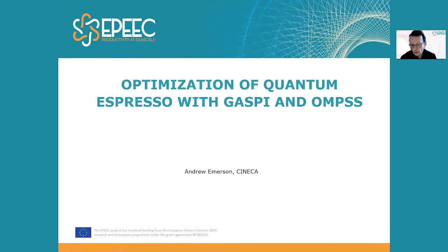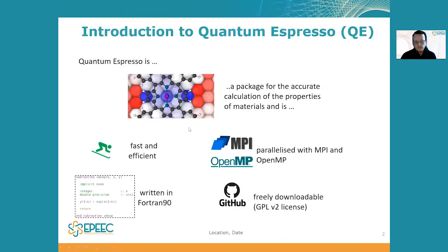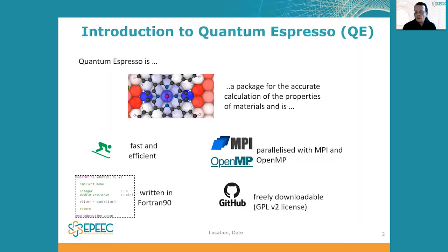In this presentation I'm going to talk about the optimization of the Quantum ESPRESSO program with GASPy and OmpSs. Quantum ESPRESSO is a package of programs for the accurate calculation of the properties of materials. It is parallelized with MPI and OpenMP, written in Fortran 90, and freely available under a GPL license — downloadable from GitHub, GitLab, or the Quantum ESPRESSO site.